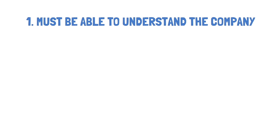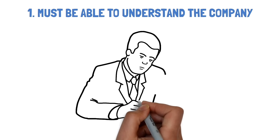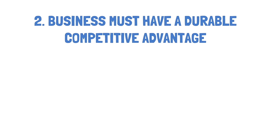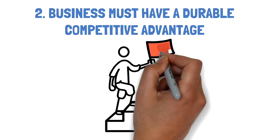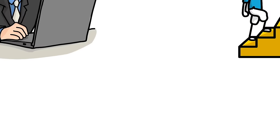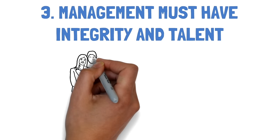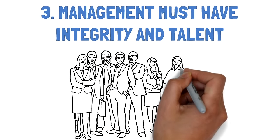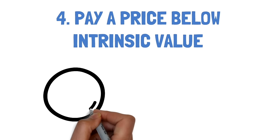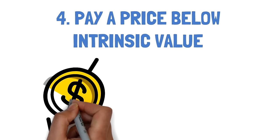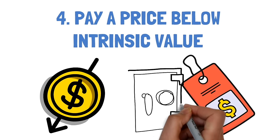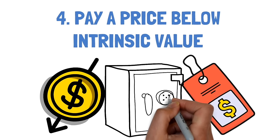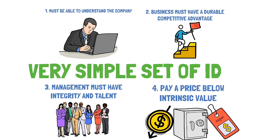We have to deal with things that we're capable of understanding. And then, once we're over that filter, we have to have a business with some intrinsic characteristics that give it a durable, competitive advantage. And then, of course, we would vastly prefer a management in place with a lot of integrity and talent. And, finally, no matter how wonderful it is, it's not worth an infinite price. So we have to have a price that makes sense and gives a margin of safety, considering the natural vicissitudes of life. That's a very simple set of ideas.